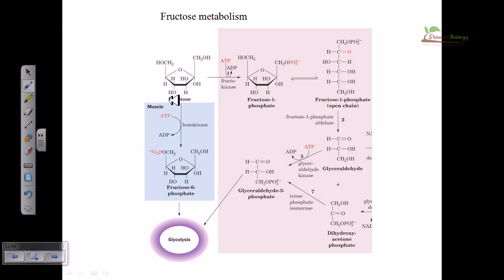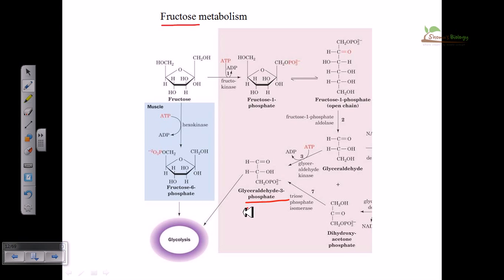Fructose is also a monosaccharide, like glucose. As I mentioned about feeder pathways, whenever you have any monosaccharide instead of glucose, you can take those monosaccharides and if you can produce any one intermediate of glycolysis, all the conventional glycolysis future steps can be carried out. Here at the end we produce glyceraldehyde-3-phosphate, or G3P, which is a very important intermediate of glycolysis. By producing G3P we can establish all the future glycolysis stages.